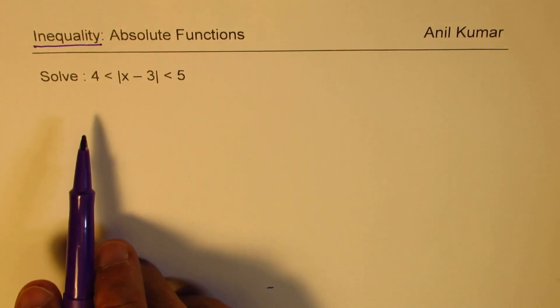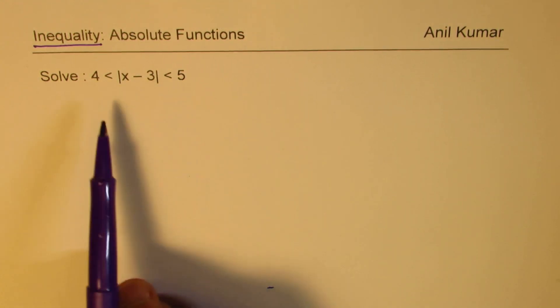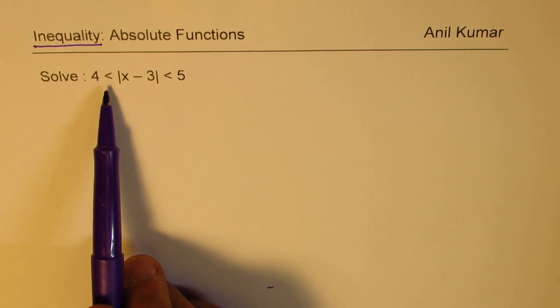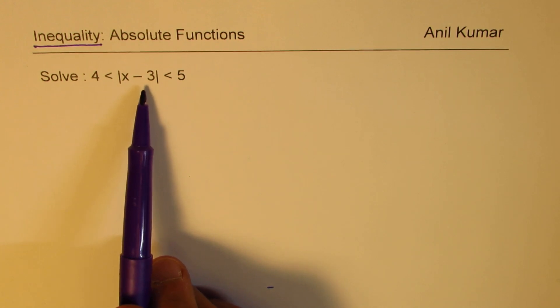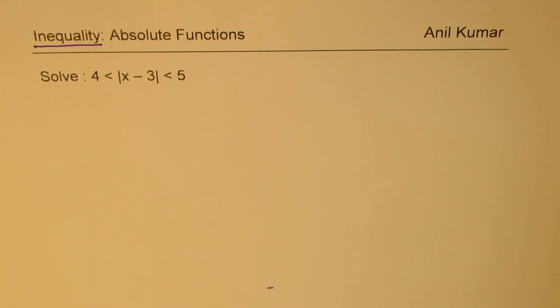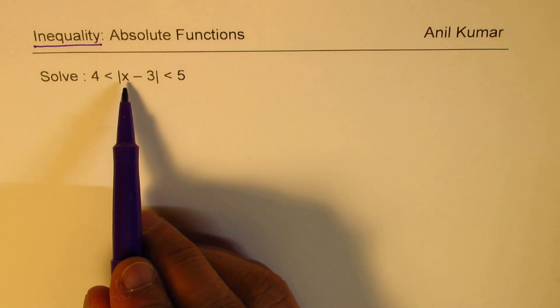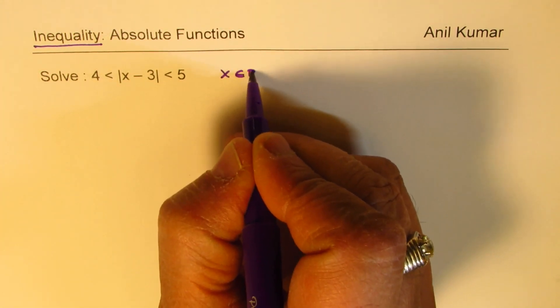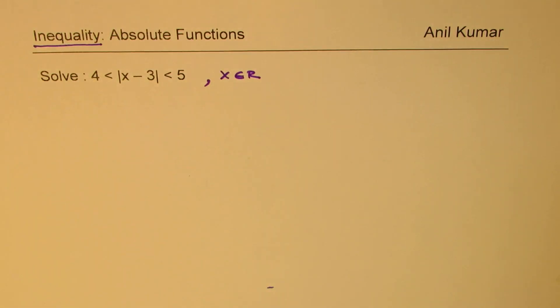So here is an example which involves absolute function. We have the question for you as 4 is less than absolute value of x minus 3, which is less than 5. When we say solve, we want possible values of x, and x belongs to real numbers. So that is what an inequality is for you to solve. Let's see how to find the solution of such an inequality.